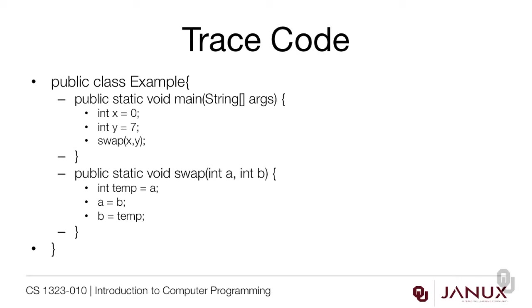Now here's the code we're going to trace. Let's read it first and try to make sense of what it's trying to do, and then see if it's actually successful in doing it. We could have answered this question by just running the program, but the problem with running the program is that while it will tell you whether it's doing the correct thing or not, it won't offer an explanation of what's going on — so you won't really understand it. And if you don't understand it, you won't be able to write the code correctly.